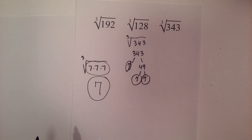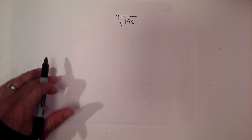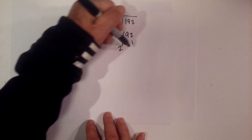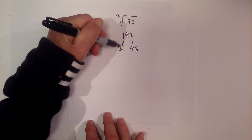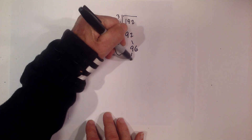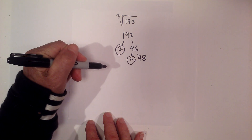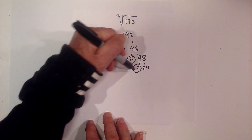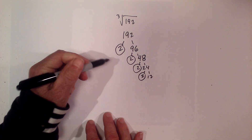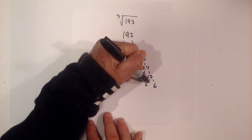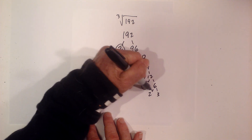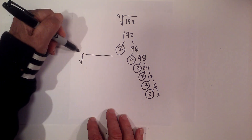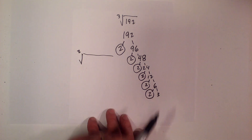Now let's look at a couple that are not perfect cubes. Let's try the cube root of 192. I know that 2 goes into 192, 96 times. Circle the 2 because that is prime. Now 2 times 48 equals 96. Then 2 times 24, then 2 times 12, 2 times 6 equals 12, and finally 2 times 3 equals 6. So I can rewrite the cube root of 192 with the prime numbers that multiply together.